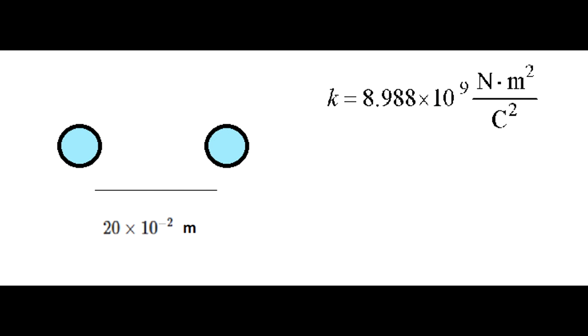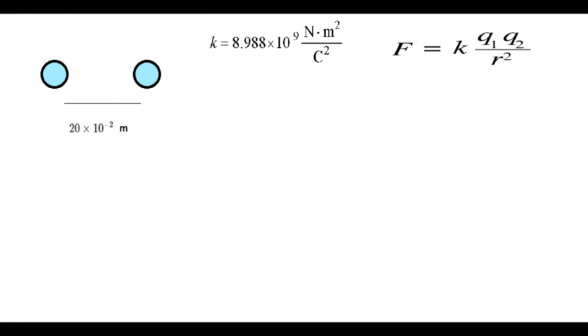Now we have to take this into account. K is 8.988 times 10 to the 9 newton meter squared divided by coulomb squared. The formula for electric force is k multiplied by q1 multiplied by q2 divided by r squared.